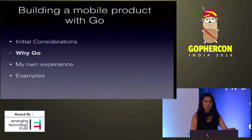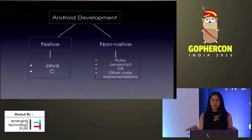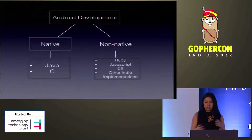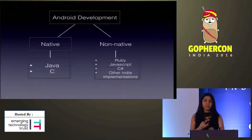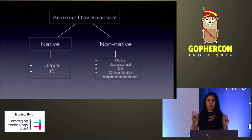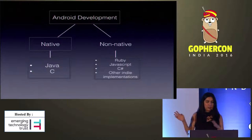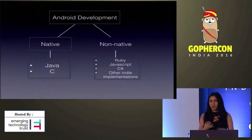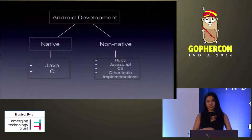This leads us to: why Go for your mobile product? Before, some years ago, we had two options to build Android products — either natively or non-natively. Natively we only had Java or C. The non-native way was Ruby, JavaScript, C#, and all those frameworks, plus various independent implementations.